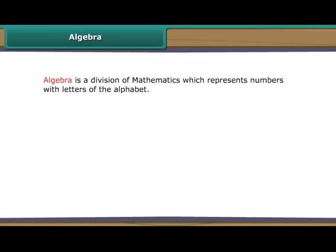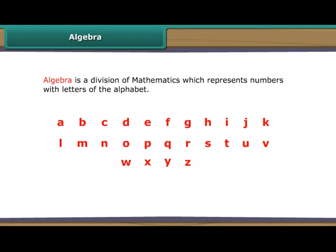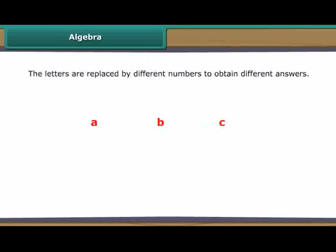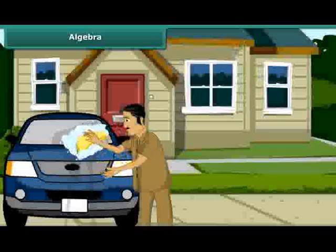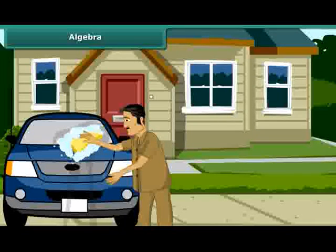Algebra is a division of mathematics which represents numbers with letters of the alphabet. The letters are replaced by different numbers to obtain different answers. Therefore, as the letters assume varying numeric values, they are called variables. Let us look at some more real-life situations in which algebra is used.